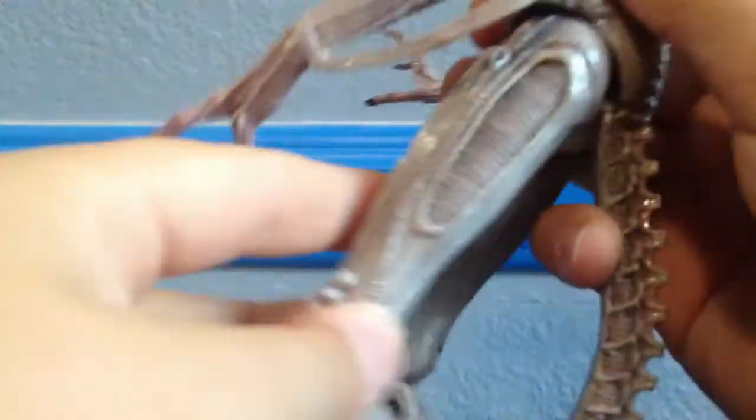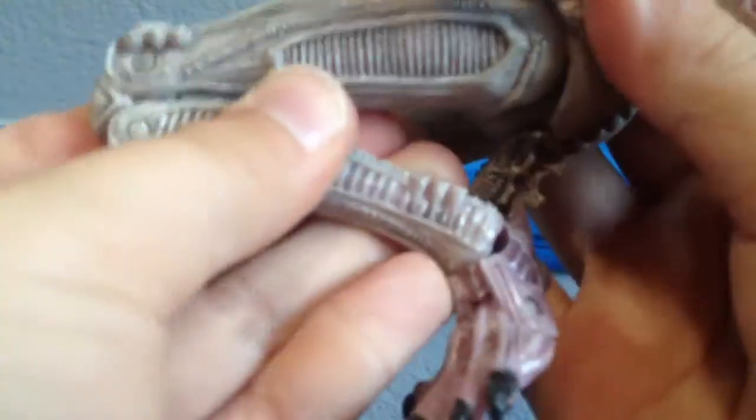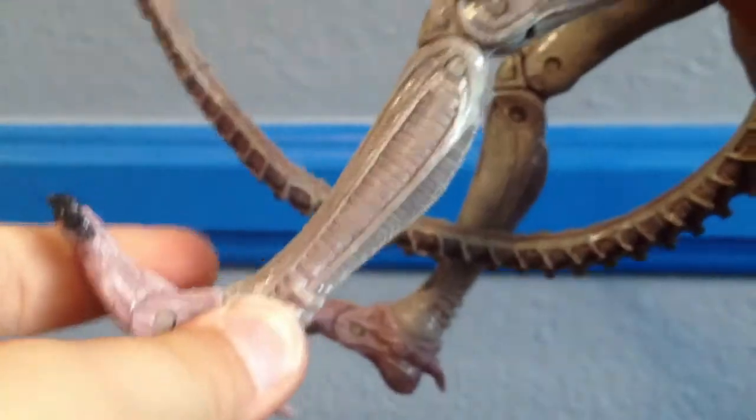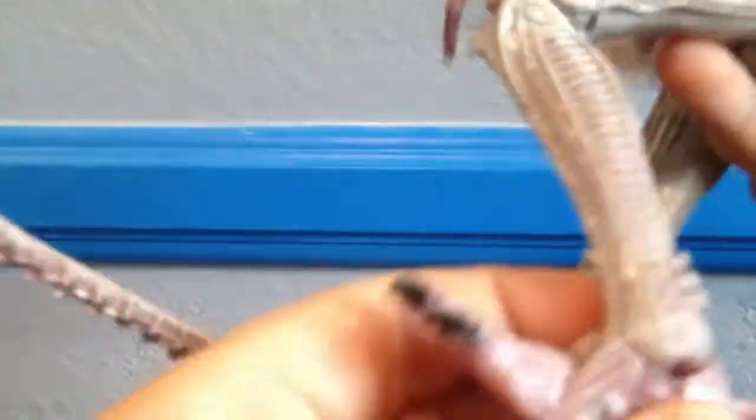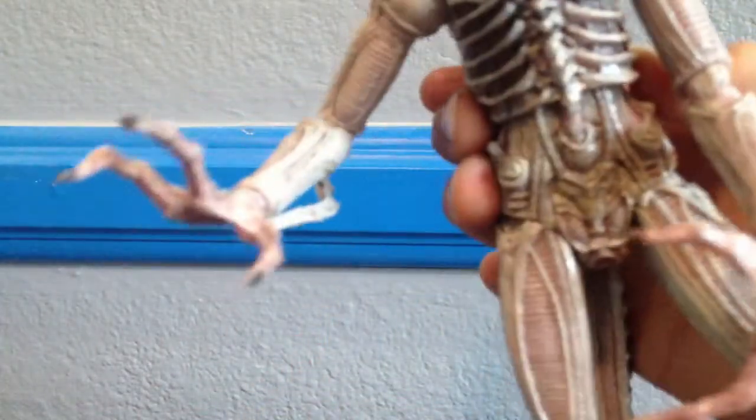His tail is on a bendy wire. His legs can move out that far, go back that far. He's got double-jointed knees which is always helpful. His feet are on, have like an ankle rocker pivot. And he's got toe articulation there. That's all for articulation.